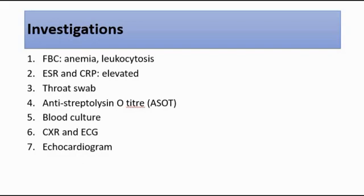We can also do blood culture, chest X-ray, and ECG to look for cardiomegaly or signs of congestive cardiac failure to suggest carditis, and also atrial fibrillation to suggest carditis as well. We can also do an echocardiogram to look at the valve, especially the mitral valve, to look for any mitral stenosis as a complication of acute rheumatic fever.